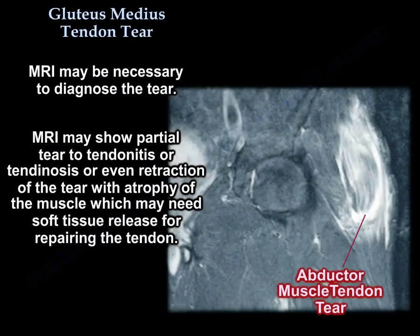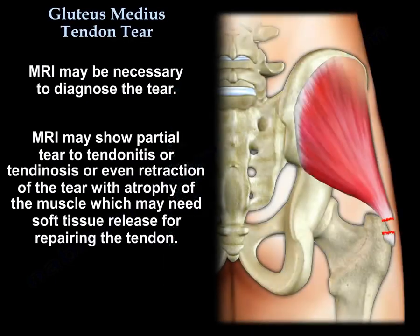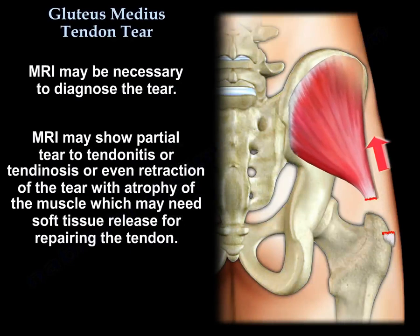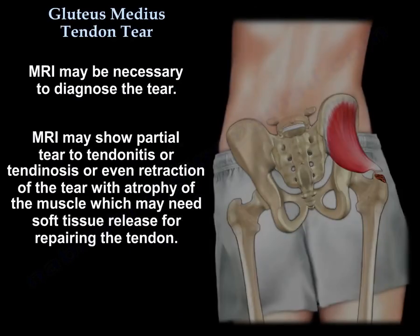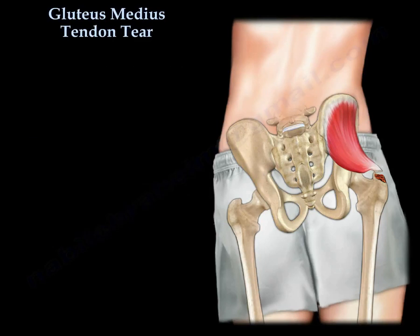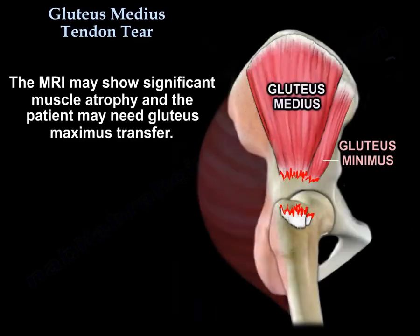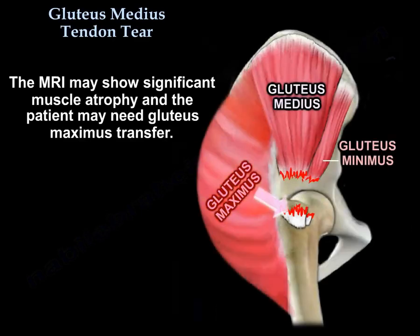The MRI may show partial tear, tendinitis or tendinosis, or even retraction of the tear with atrophy of the muscle, which may need soft tissue release for repairing the tendon. The MRI may also show significant muscle atrophy, and the patient may need gluteus maximus transfer.